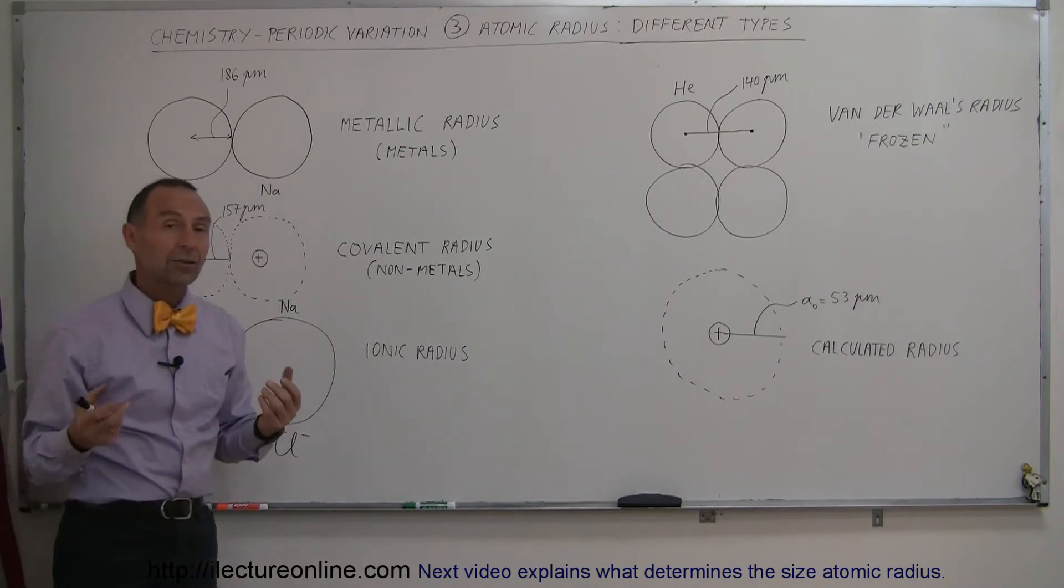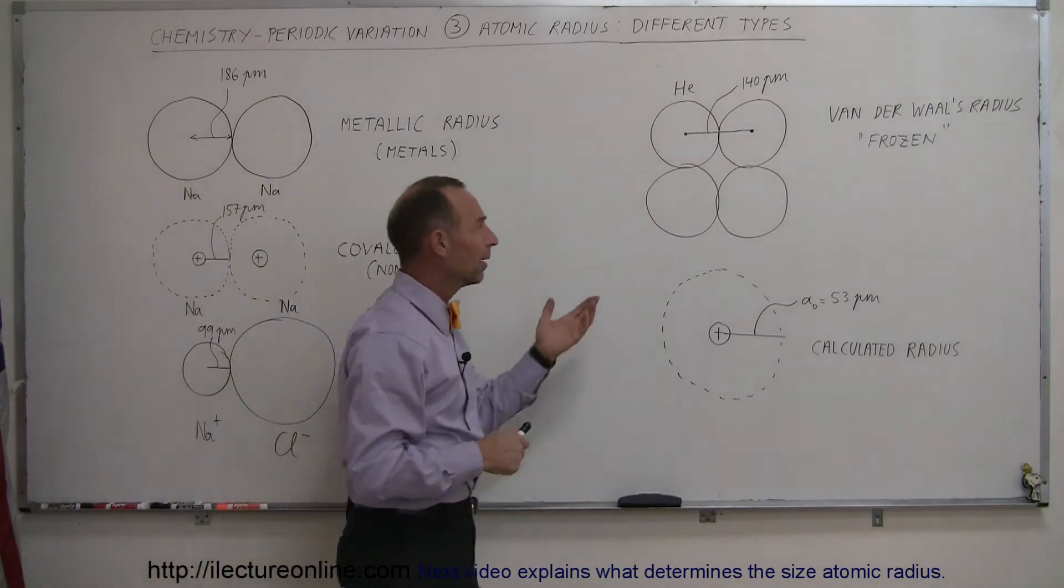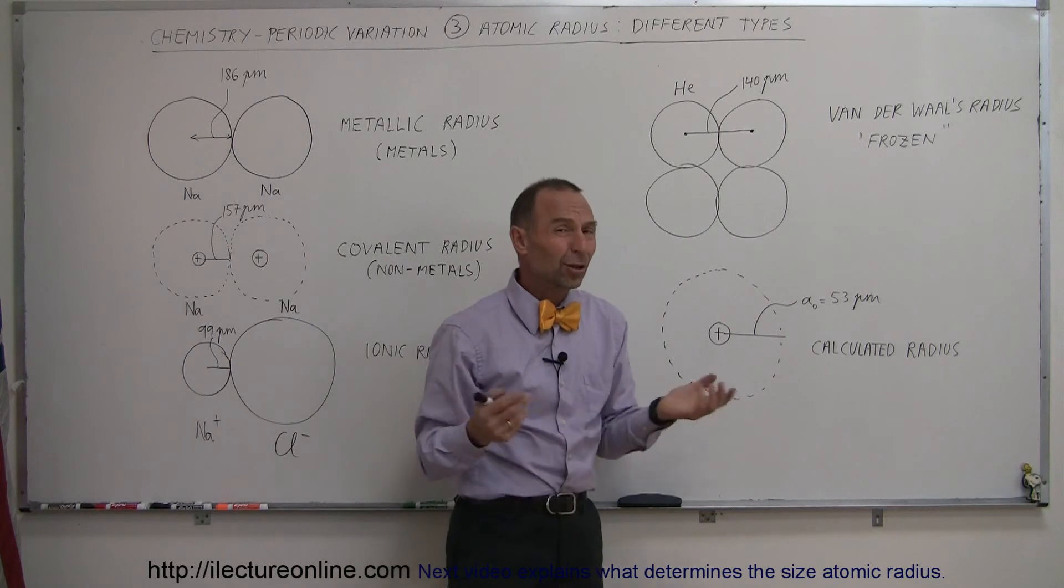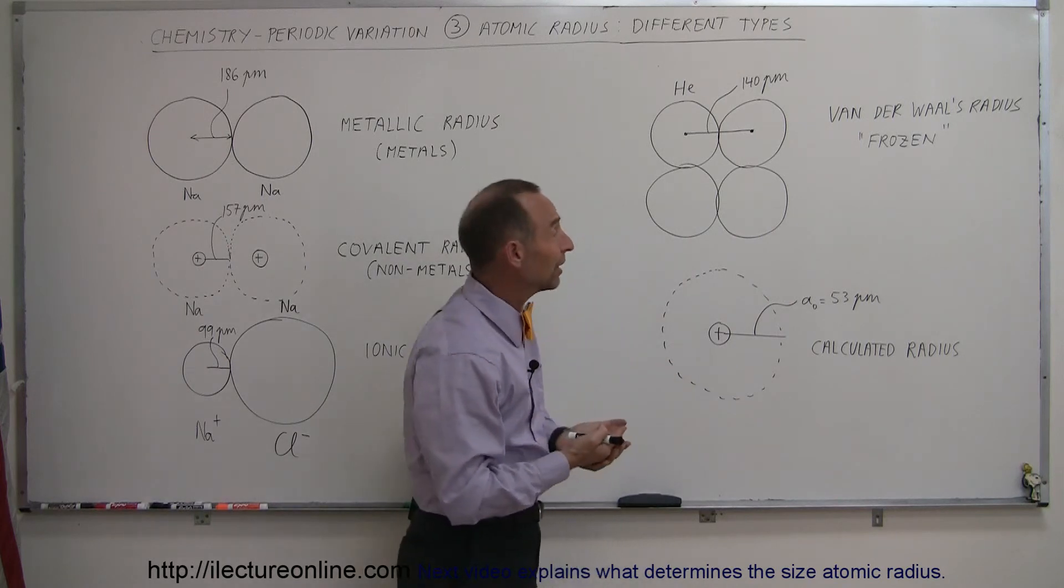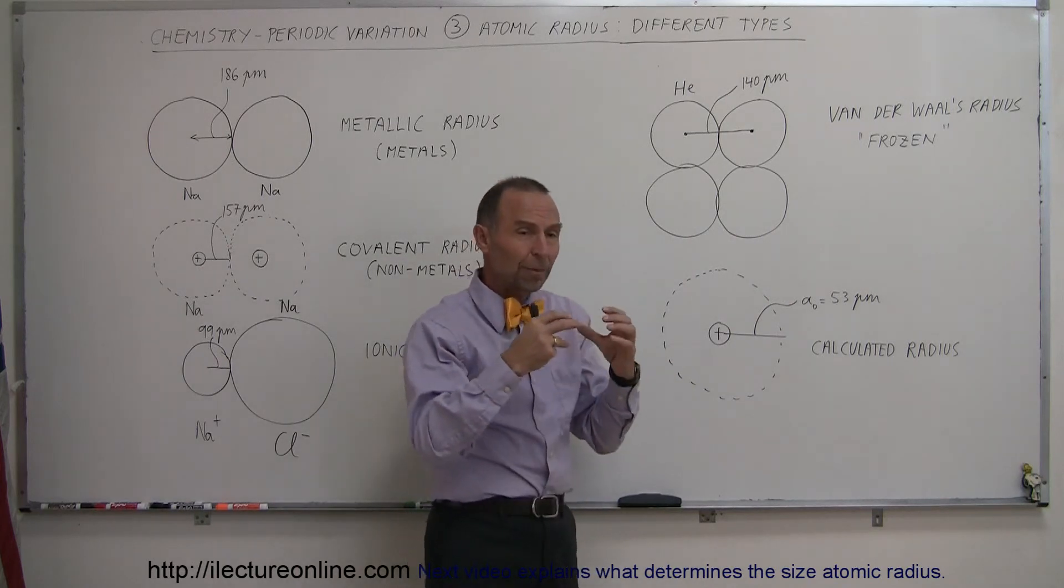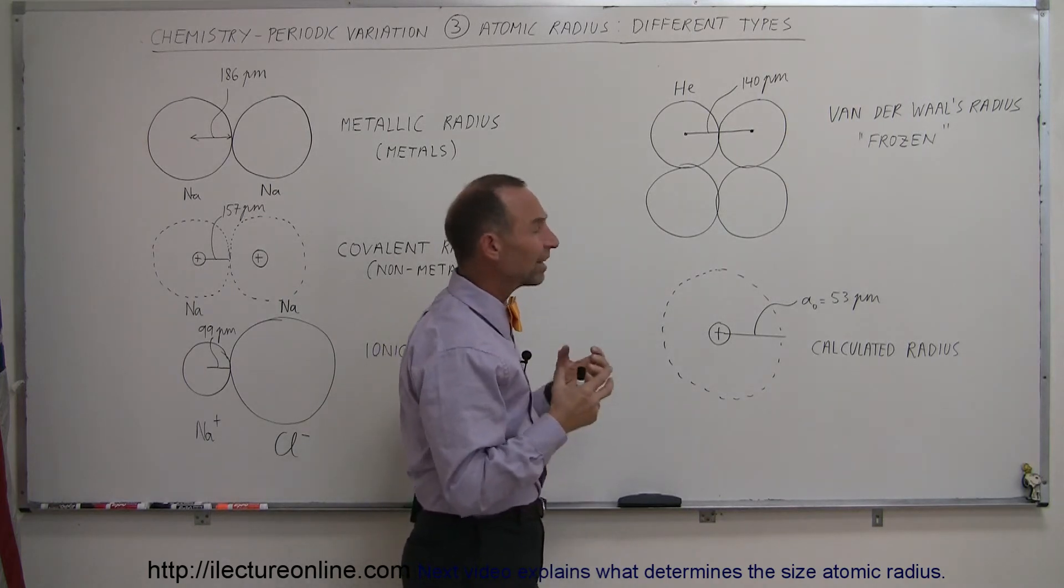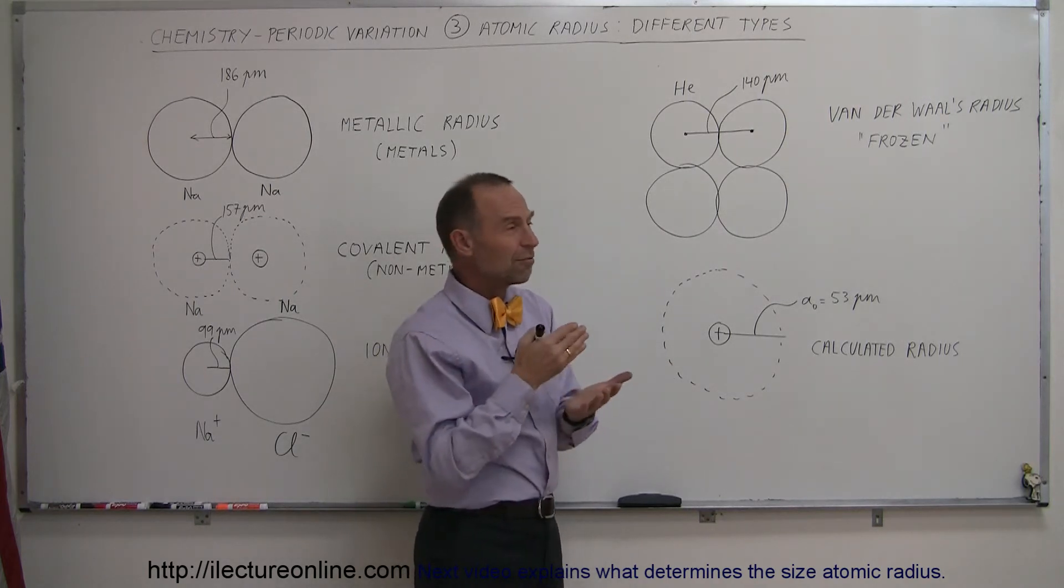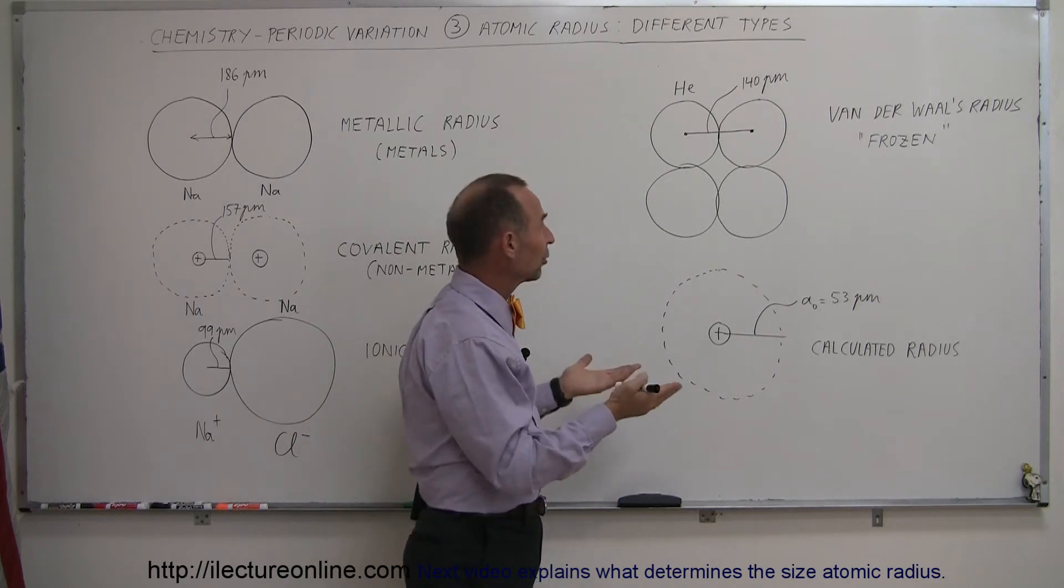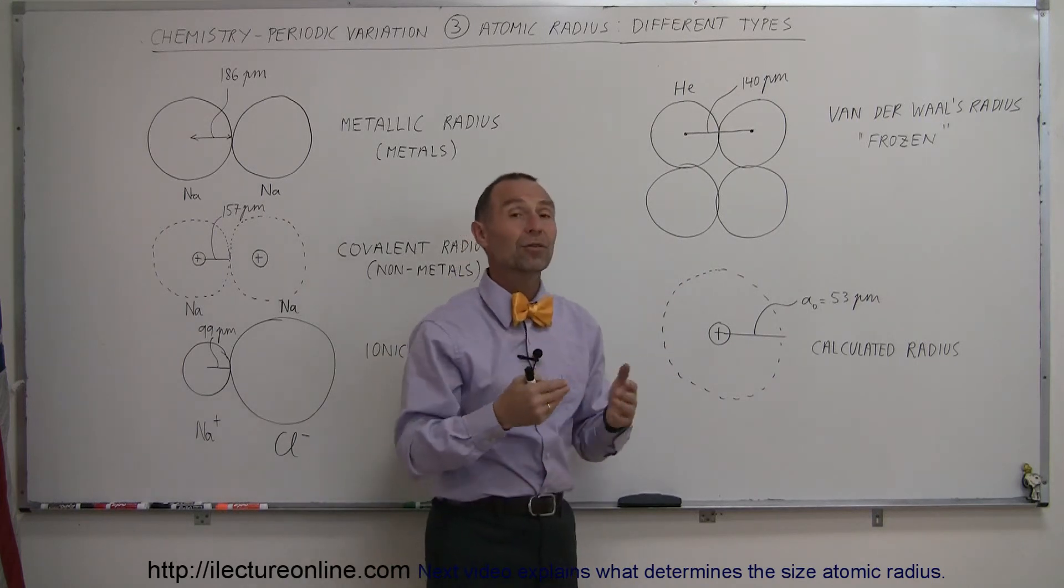Now, there's other ways of looking at the radius of atoms. For example, noble gases. Now, noble gases don't react very easily with anything else, so they tend to remain as gases, single molecules floating through space. And because of that, it's really difficult to measure the volume of a molecule, like, for example, or an atom of helium.